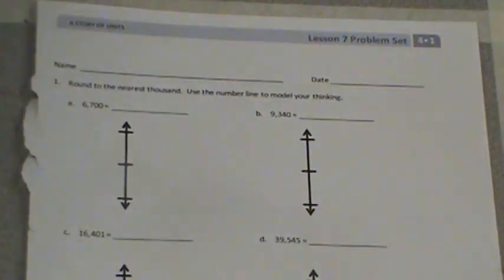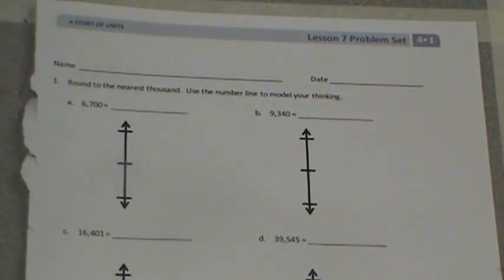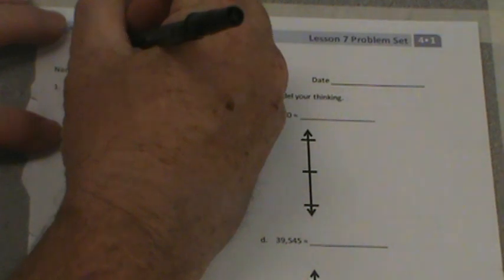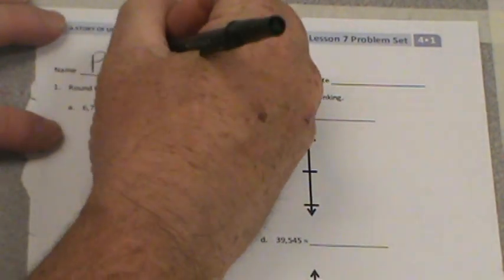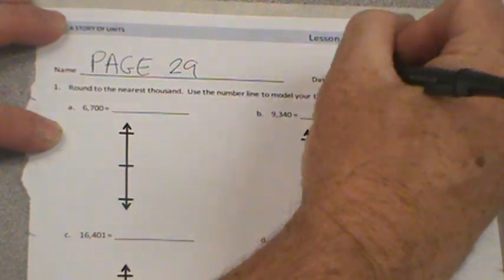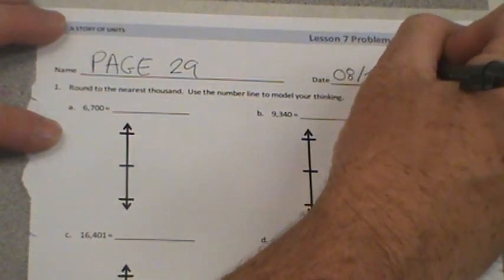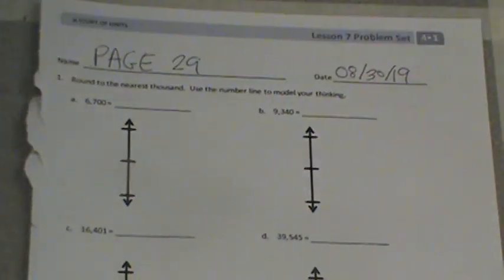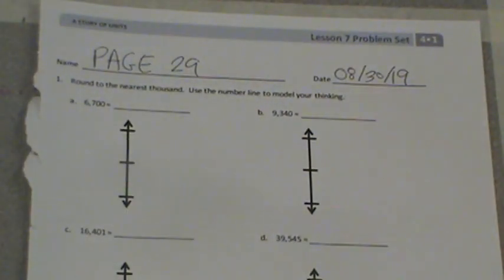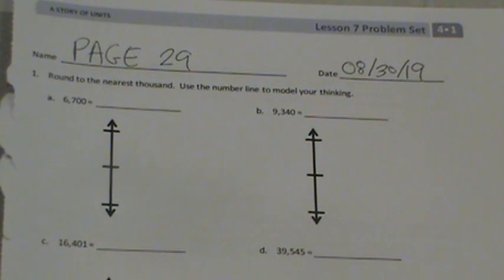So you need to get your problem set out for lesson 7. That's on page 29. I'm going to go ahead and write page 29. Today's date is the 30th of August. So get that paper out, page 29, in your problem set. We're talking about the 4th grade problem set, so be sure you get out the right one, not the 3rd grade problem set.